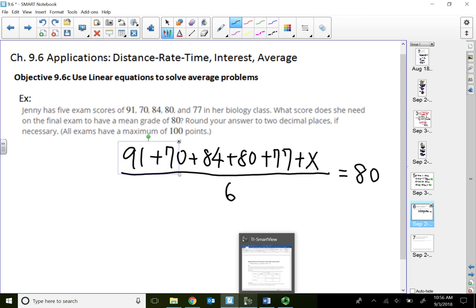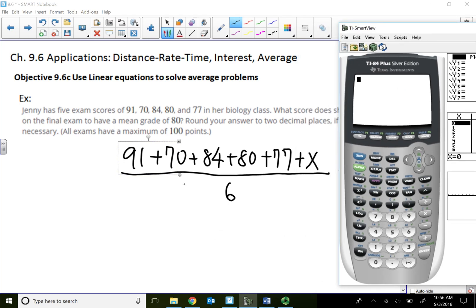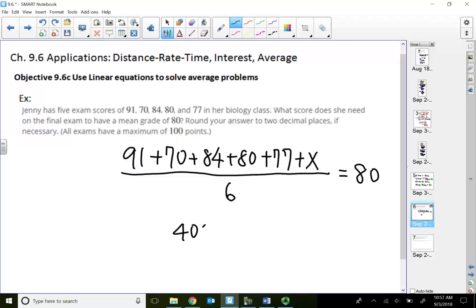All right, so let me just add up what I got on the numerator here, because this whole big fraction is one term only. It's just my numerator has a lot of terms. So let's add them up. 84 plus 80 plus 77. So the total points from the first five tests is 402, plus the grade for the sixth exam, divided by six, equal to 80.